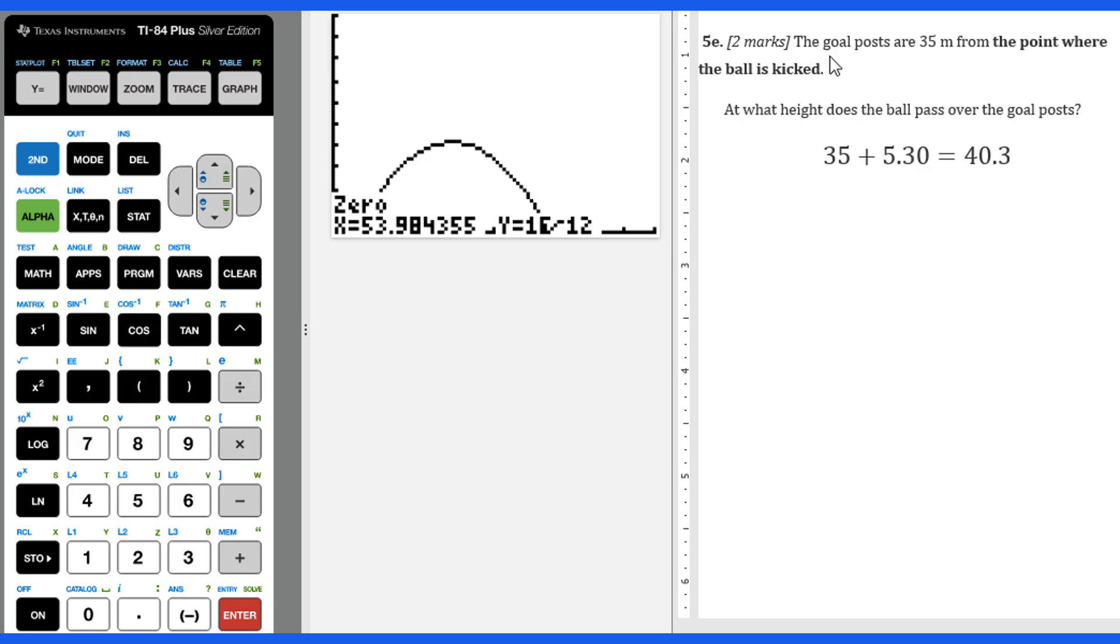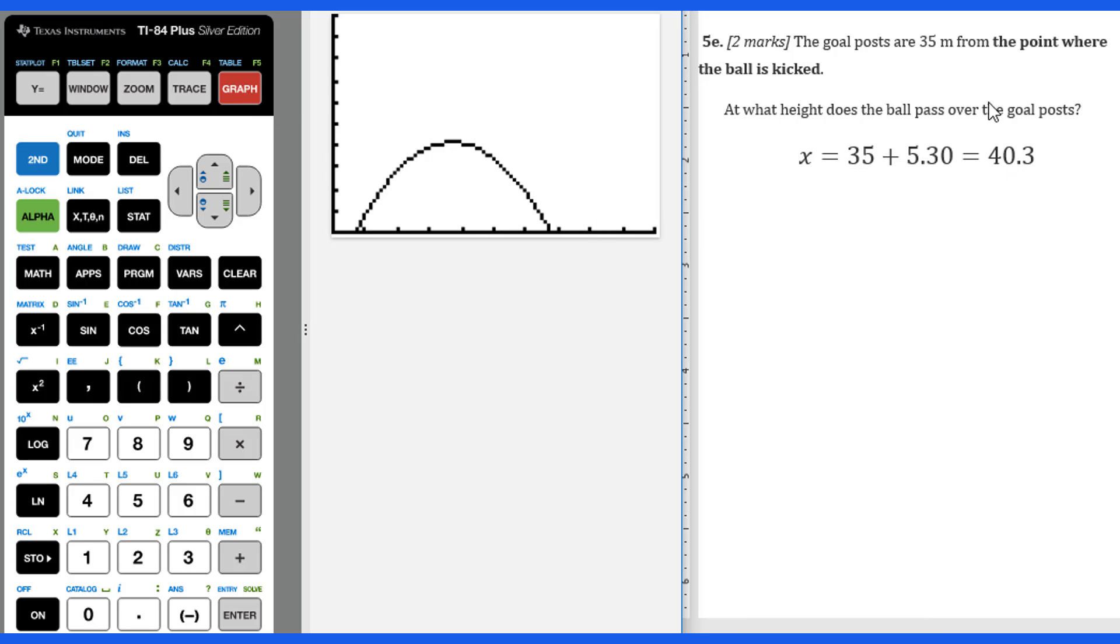For 5e, the goal posts are 35 meters from the point where the ball is kicked. At what height does the ball pass over the goal posts? First of all, we need to figure out x equals 35 plus 5.30. That will be the x, that's 40.3. Then we go to trace and we put in 40.3. Put enter. They give you y equals 10.1. That will be the height at the goal posts.